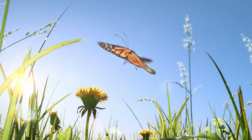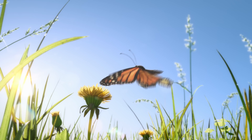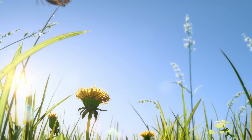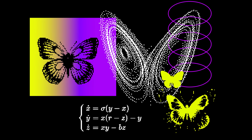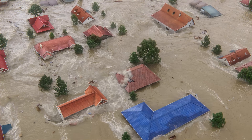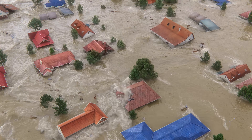At its core, the butterfly effect is a concept in a branch of mathematics called chaos theory. This part of chaos theory suggests that small changes in the initial conditions of a process or system can lead to large-scale, unpredictable consequences.